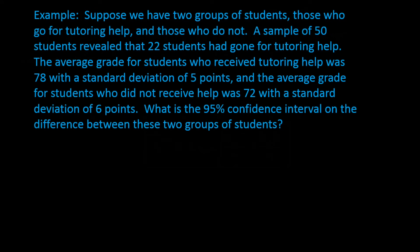Let's look at a long and wordy problem. Suppose we have two groups of students: those who go for tutoring help and those who do not. A sample of 50 students revealed that 22 had gone for tutoring help. The average grade for students who received tutoring was 78 with a standard deviation of 5 points, and the average grade for students who did not receive tutoring was 72 with a standard deviation of 6 points. What is the 95% confidence interval on the difference between these two groups?